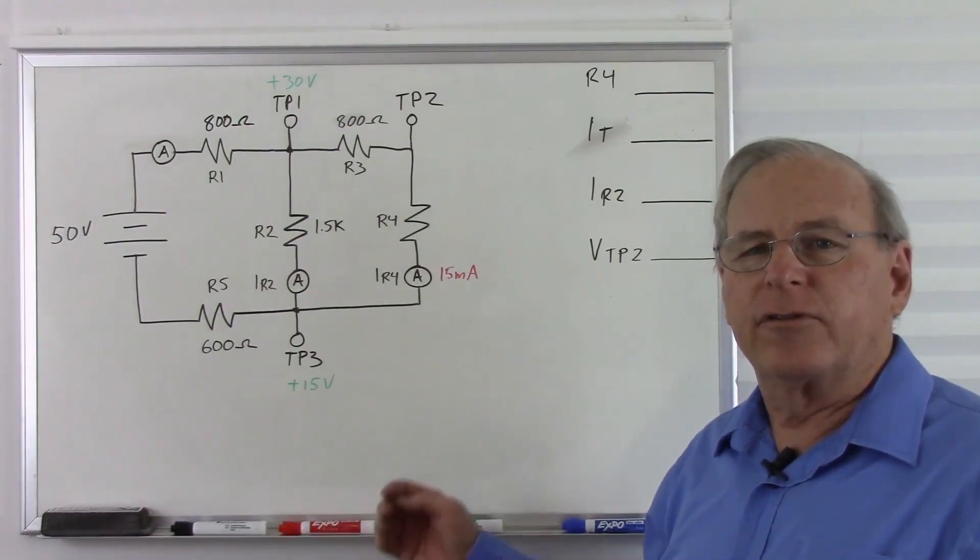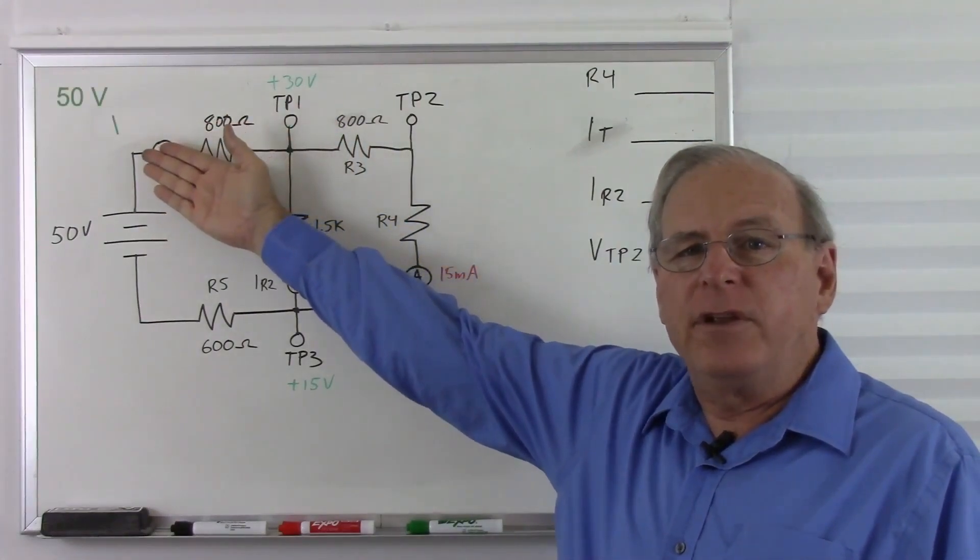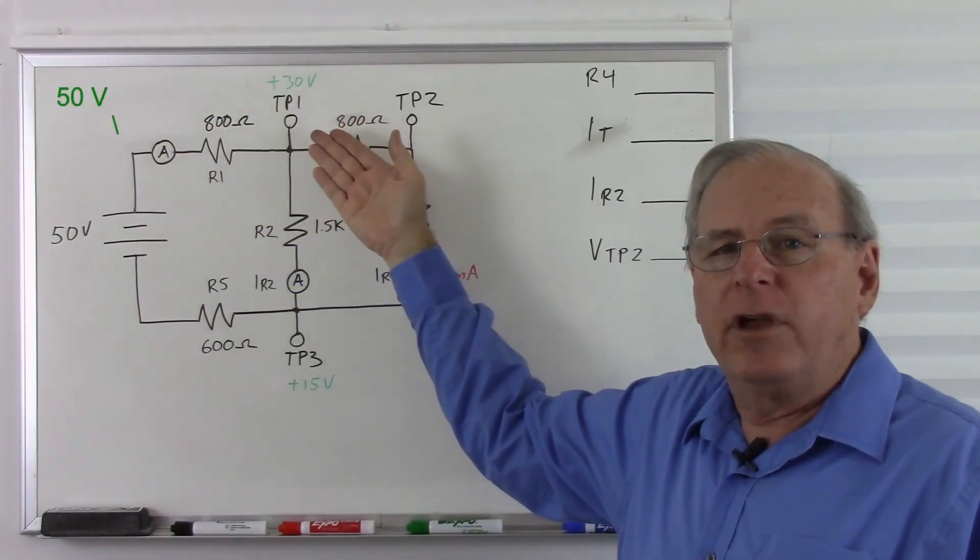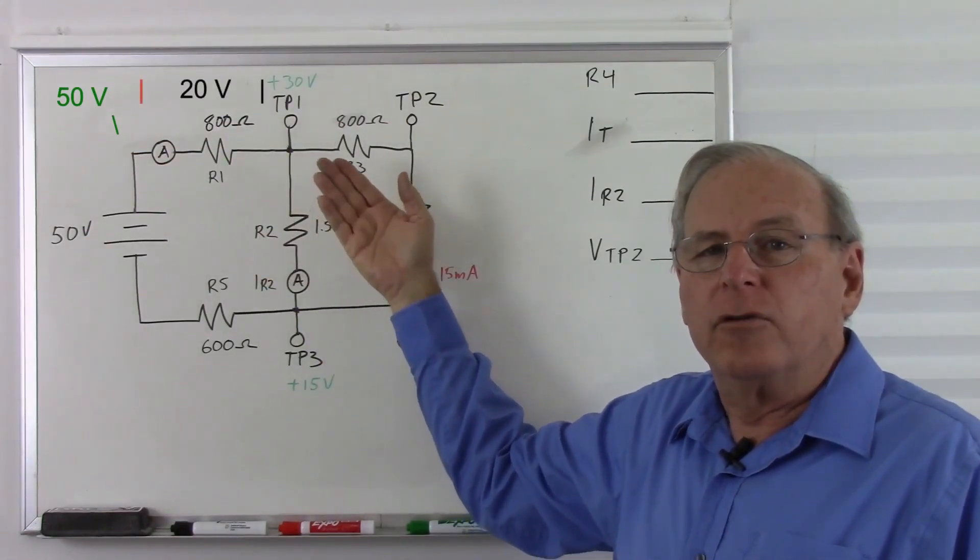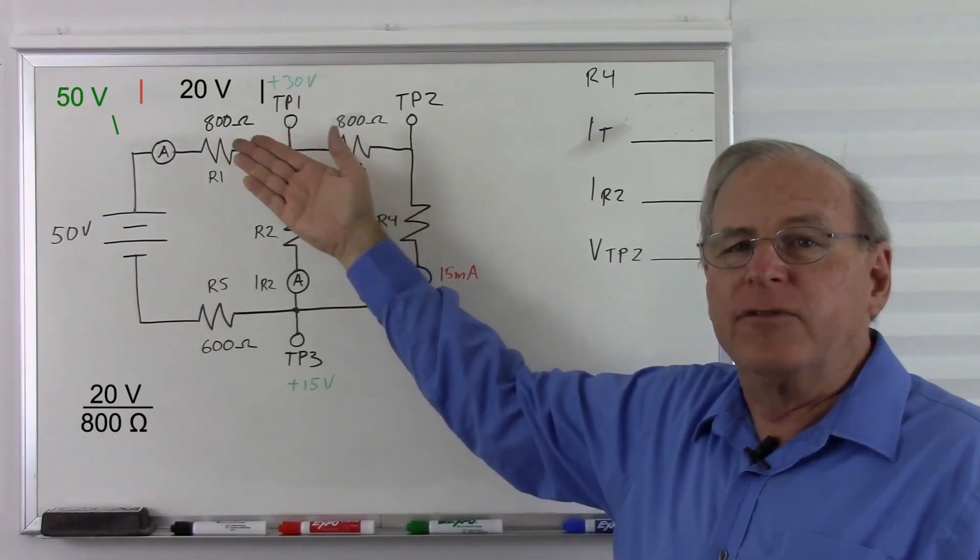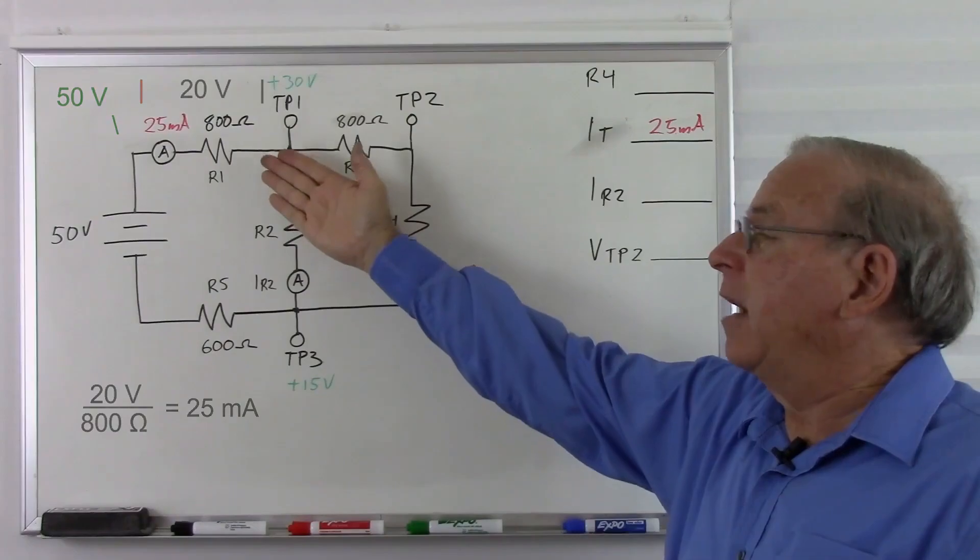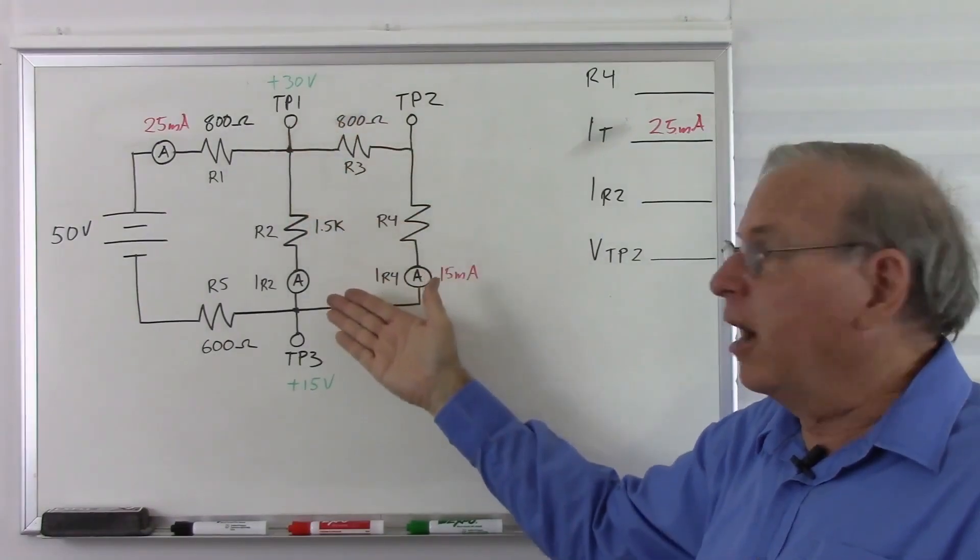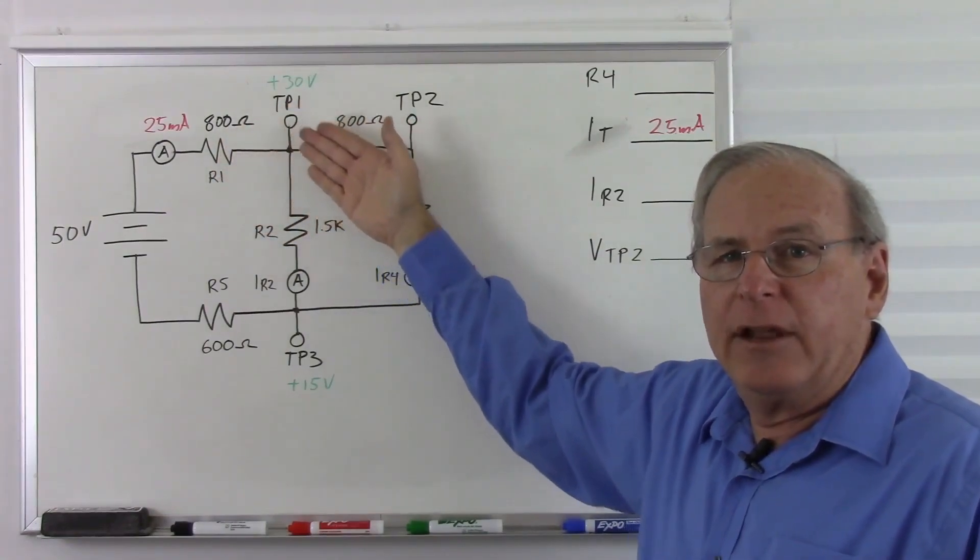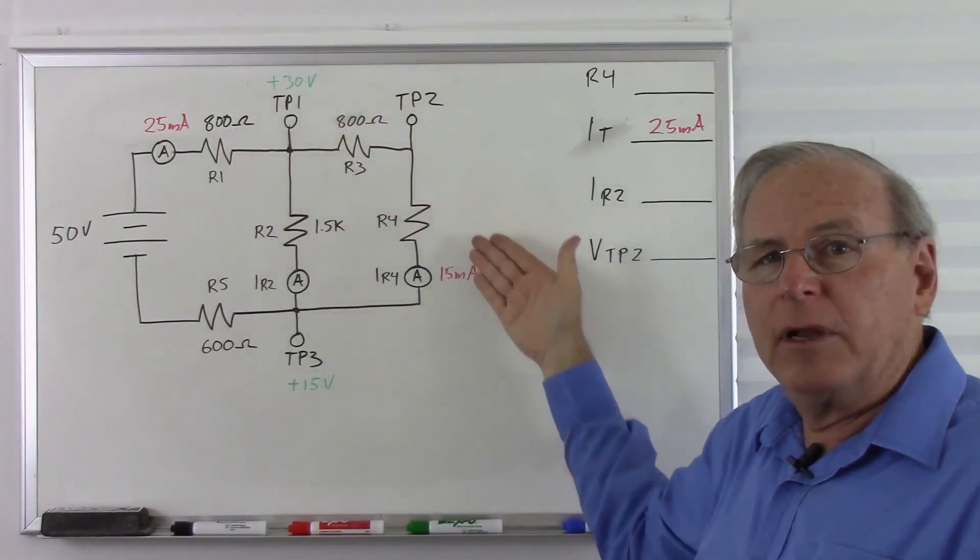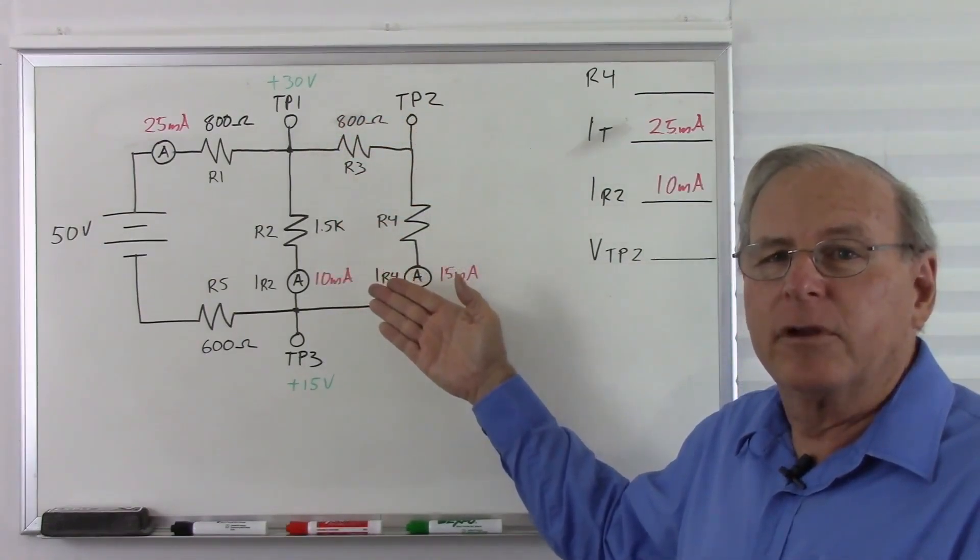Let's see if there's any place in this circuit where there's two parameters that can give us a third. And right off the bat, I can see that there's 50 volts here and 30 volts here. So there's 20 volts across this 800 ohm resistor. So 20 volts divided by 800 ohms gives us 25 milliamps. Now that we have the total current, we can figure out how much current is going through R2. Because if we have 25 milliamps coming here, it splits two ways. 15 milliamps goes this way. That means that 10 milliamps goes this way.